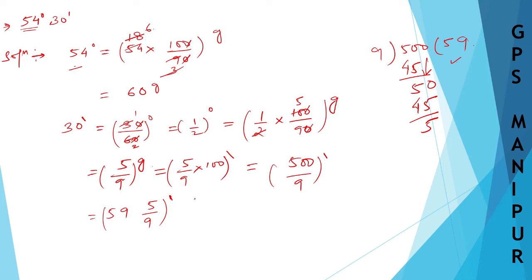Now 5 by 9, I can do the same thing again. This is 5 by 9 minutes, and 5 by 9, same thing, into 100. If I multiply by 100, this minute is going to convert into seconds. So 59, same thing, 59, 5 by 9. So I can write down 59, 5 by 9, and this is seconds.